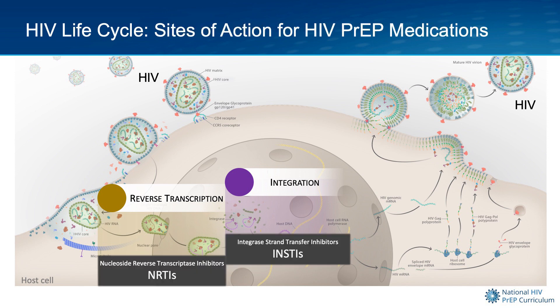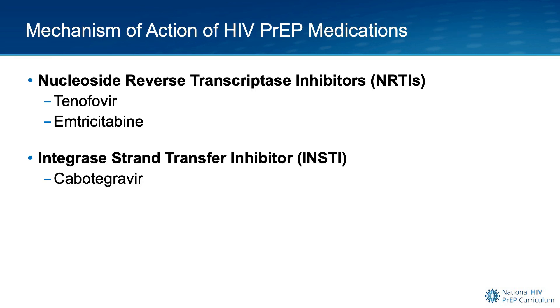These two steps are relevant to the mechanism of action of the nucleoside reverse transcriptase inhibitors, or NRTIs, and the integrase strand transfer inhibitors, or INSTIs. Tenofovir and emtricitabine are in the category of nucleoside reverse transcriptase inhibitors, NRTIs, and cabotegravir is an integrase strand transfer inhibitor, or INSTI.